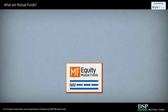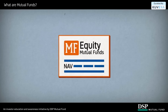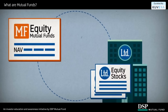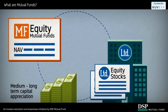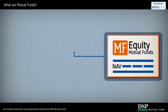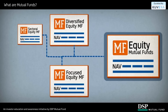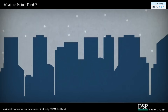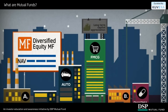Now that you have understood debt funds better, let us talk about equity funds. The primary objective of equity funds is to invest in equity stocks and equity-oriented instruments and provide capital appreciation over the medium to long term. The various types of equity funds include diversified funds, focused funds, sectoral funds, index funds, and more.